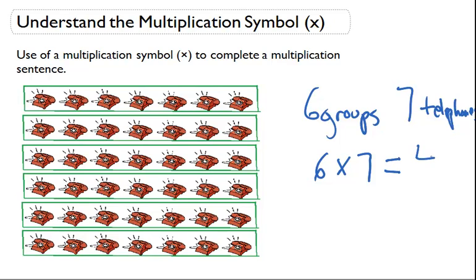And that is going to give us the answer of 42, and you can see from the multiplication table 6 times 7 equals 42.